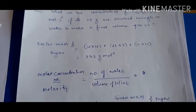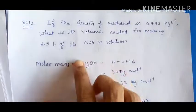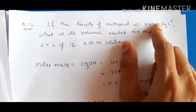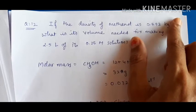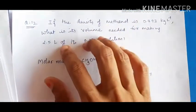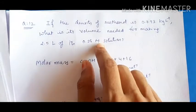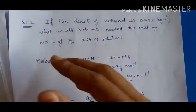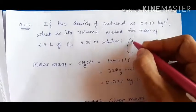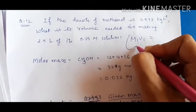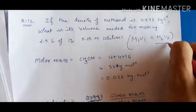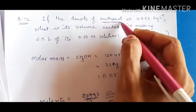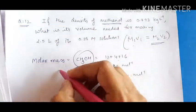Question number twelve: density of methanol is given as 0.793 kg per litre. We need to find the volume of this solution required to make 2.5 litres of a 0.25 molar solution. Since one solution is already prepared and another needs to be prepared, we use the formula M₁V₁ = M₂V₂. First, we find the molar mass of methanol — it is the first family member of the alcohol family.